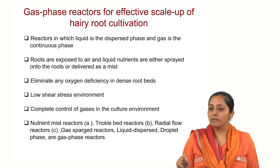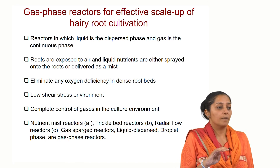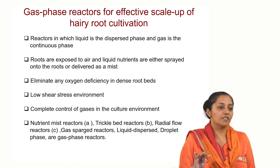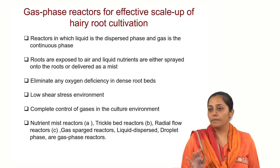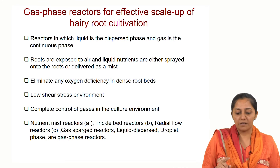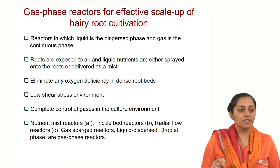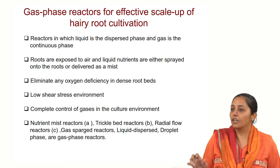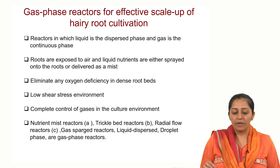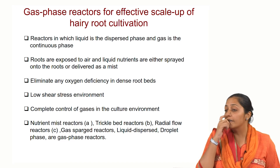Even in mist bioreactors, the cycle of the mist and the size of the droplet can be optimized for best results. In these gas phase reactor systems, liquid is the dispersed phase and gas is the continuous phase. Roots are exposed to air and liquid nutrients are either sprayed onto the roots or delivered as a mist.